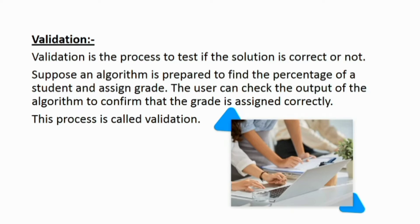Now I will explain validation. Validation is the process to test if the solution is correct or not. Suppose an algorithm is prepared to find the percentage of a student and assign a grade. The user can check the output of the algorithm to confirm that the grade is assigned correctly. This process is called validation, and it is normally performed using test data.